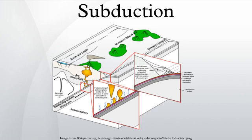Regions where this process occurs are known as subduction zones. Rates of subduction are typically centimeters per year, with the average rate of convergence being approximately 2 to 8 centimeters per year.